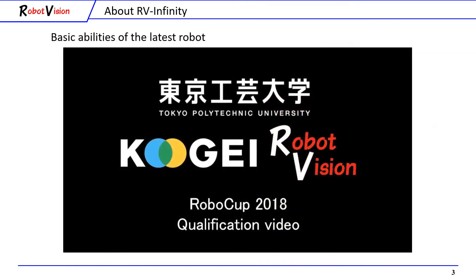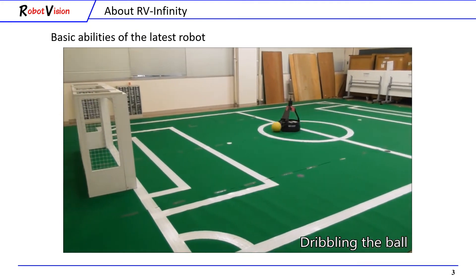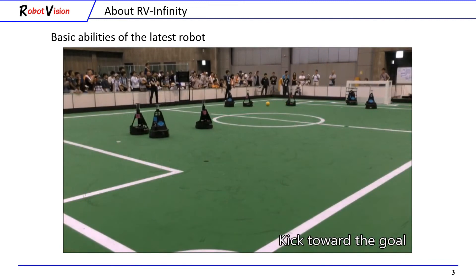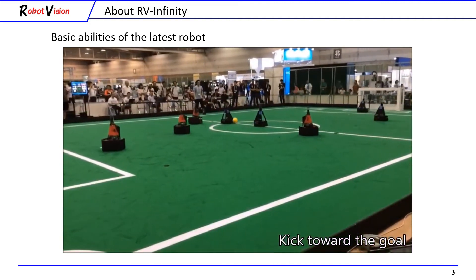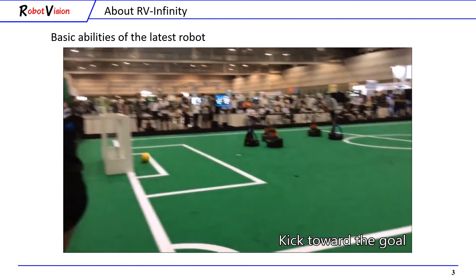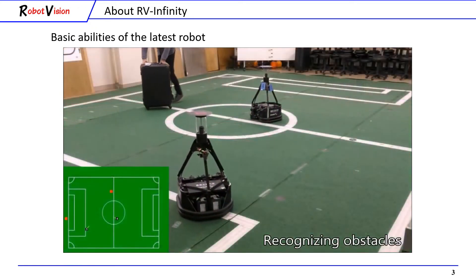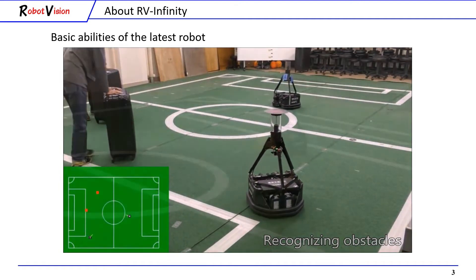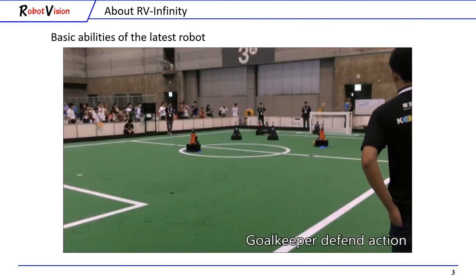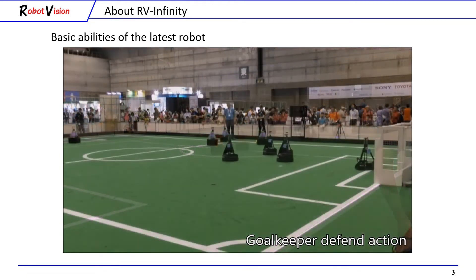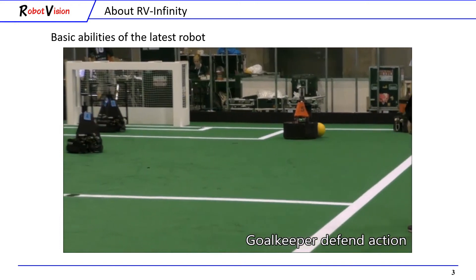This video shows the basic abilities of our latest version robot. To compete in RoboCup middle-sized league, a robot must have basic abilities for playing a soccer game like a human, such as dribbling, kicking the ball towards the goal, and passing. The robot makes these decisions autonomously by using computer vision. Here is how the self-localization of the robot works, how our robot recognizes obstacles, and how it avoids upcoming obstacles. This is an example of a defending gameplay action. The robot has specific roles such as striker, forward, defender, and goalkeeper.